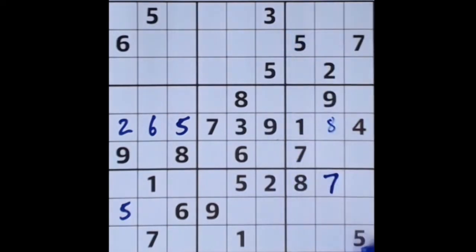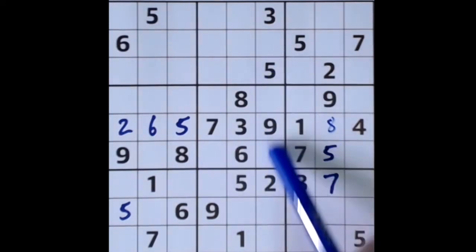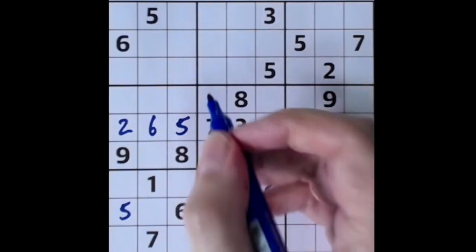5 blocking down here, 5 blocking up here, 5 goes here. 5 across here and 5 down here, 5 across here and 5 down here, that's a 5 there.